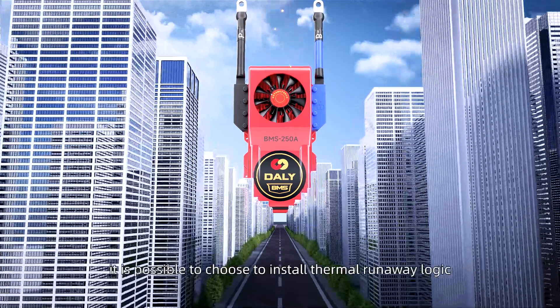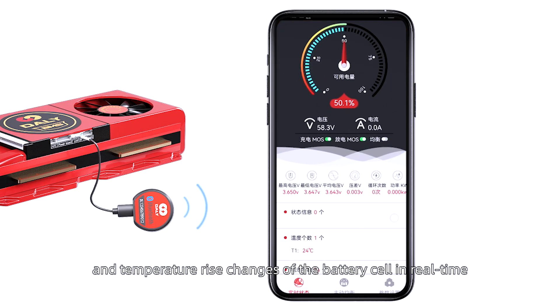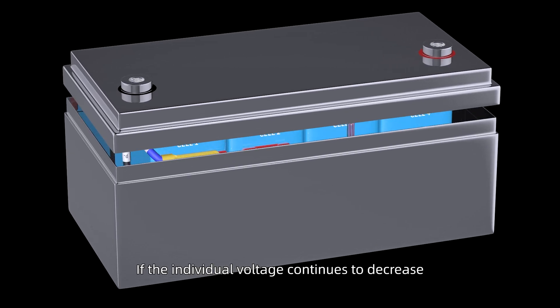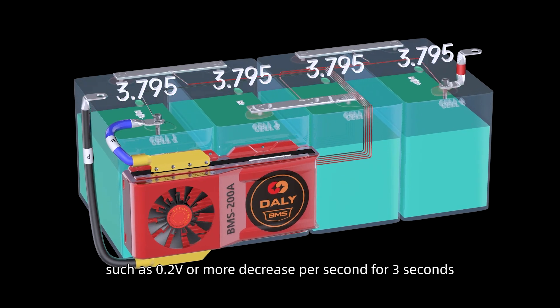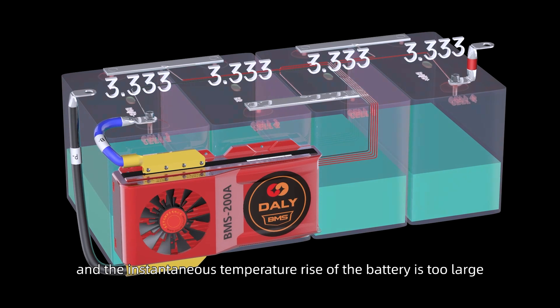In terms of BMS, it is possible to install thermal runaway logic. The BMS with thermal runaway logic will monitor the voltage and temperature rise changes of the battery cells in real-time. If the individual voltage continues to decrease, such as 0.2 volts or more decrease per second for 3 seconds, and the continuous temperature rise of the battery is too large, exceeding 10 degrees every 2 seconds.